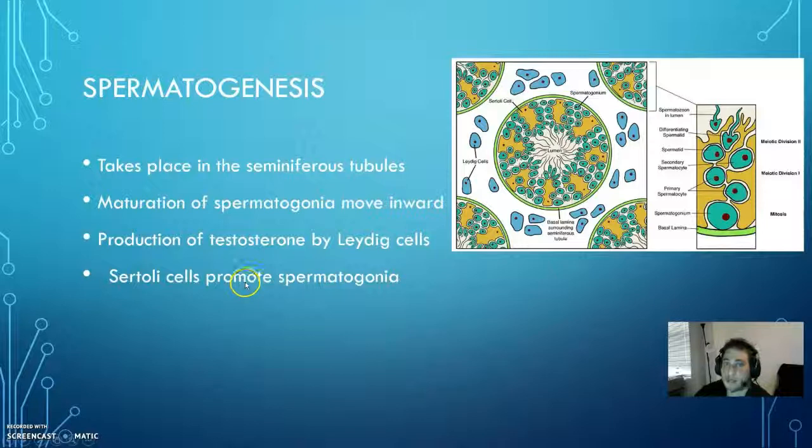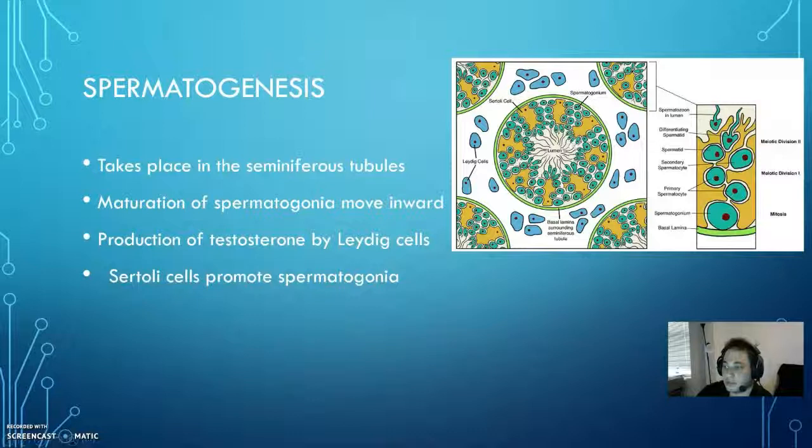Within the testes, there are certain segments called the seminiferous tubules, and that is going to be where the creation of the initial sperm cells occurs. This process is called spermatogenesis, which is the production and maturation of spermatogonia.